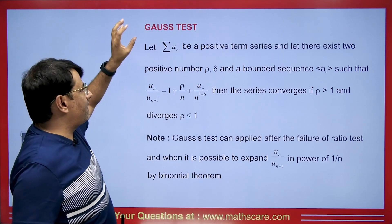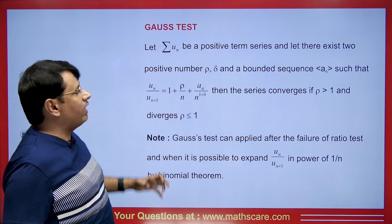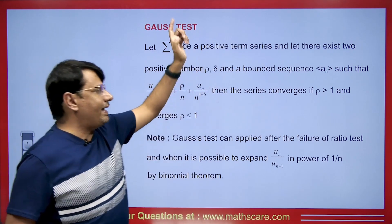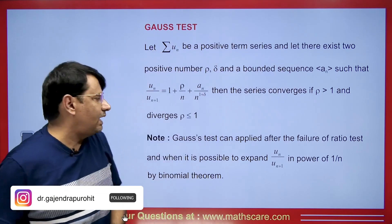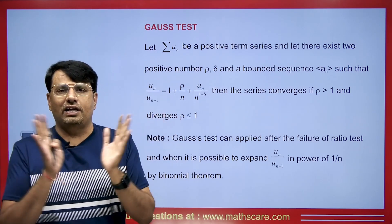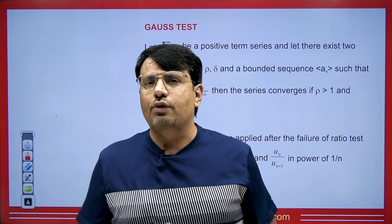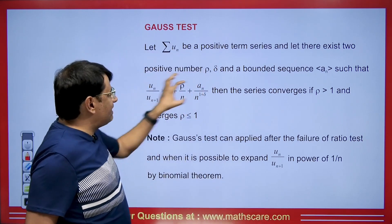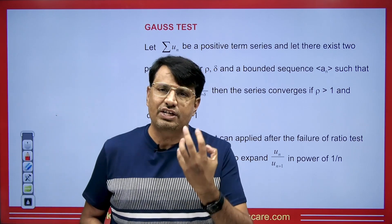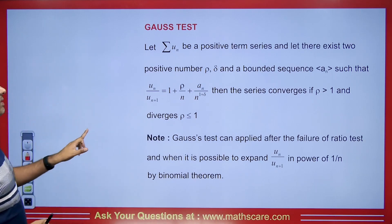Let's talk about the Gauss test. If we have any infinite series with positive terms and if we expand u_n upon u_{n+1} in the given form, then if the value of rho is greater than 1, the series is convergent. If the value of rho is either 1 or less than 1, then the series diverges. This test is used when our D'Alembert ratio test fails.